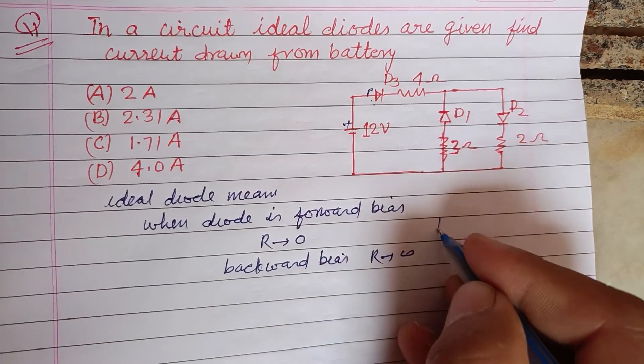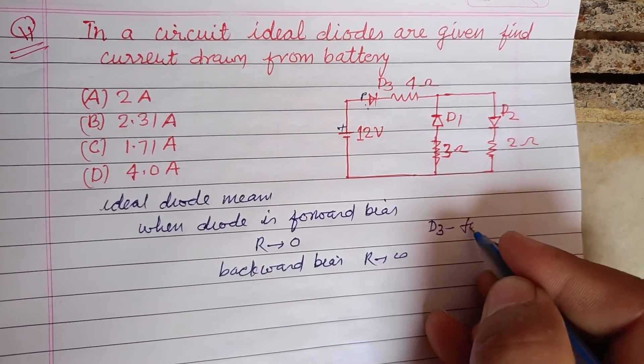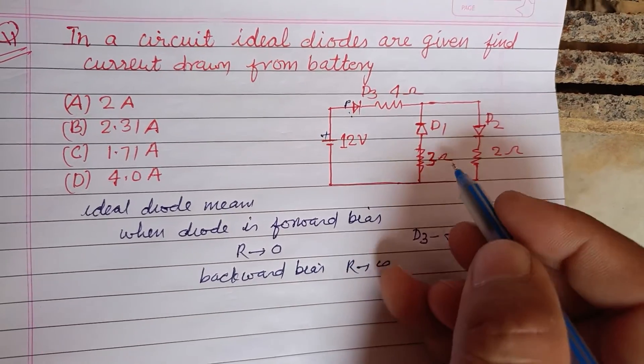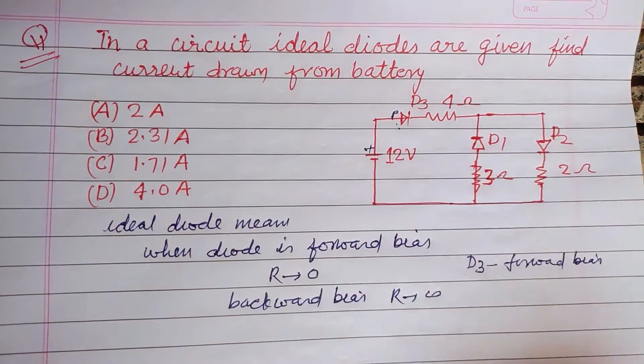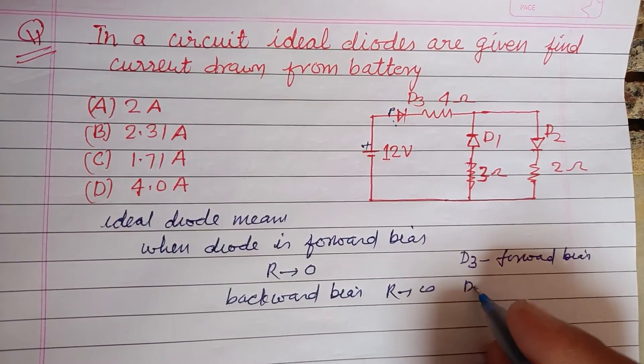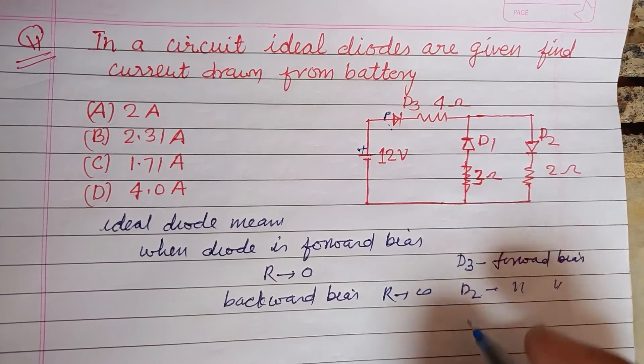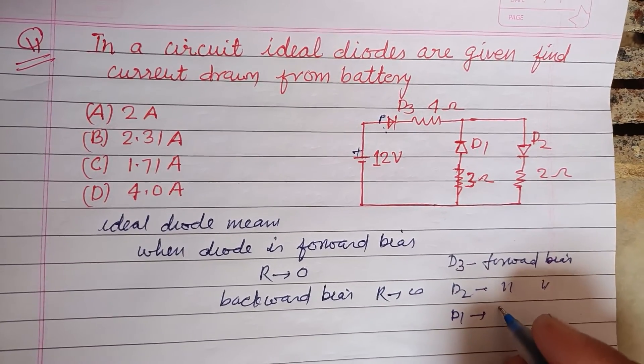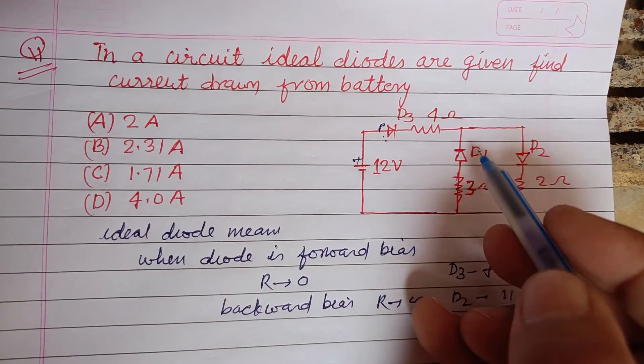This D3 is forward biased and D2 is also forward biased, but D1 is on backward bias, so there is no current in this section.